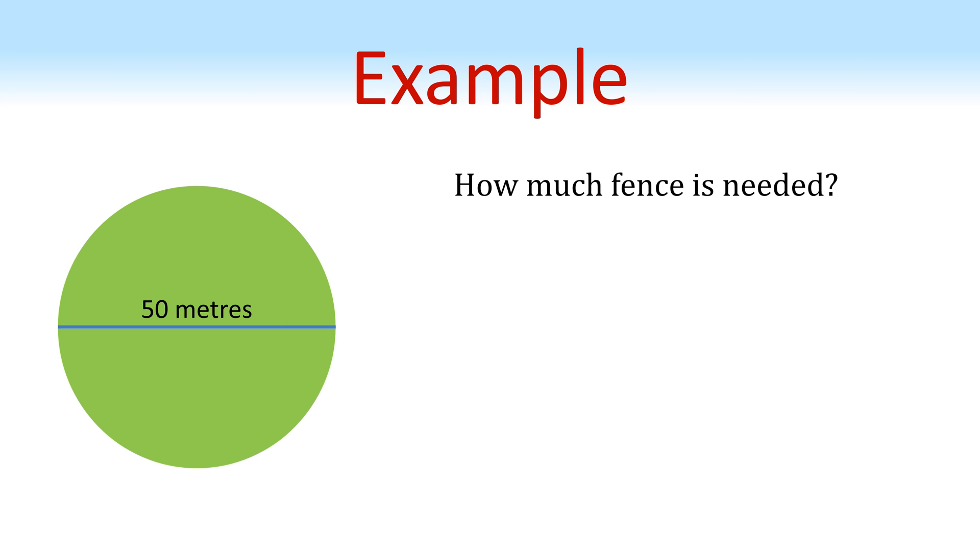Pi isn't just a cool number we learn about in maths class. It's actually everywhere. Suppose a farmer has a circular field with a diameter of 50 metres. The farmer wants to build a fence around the whole circumference of the field. How much fence does he need? Well, we know that circumference divided by diameter equals pi. Therefore, the circumference equals pi times diameter, which equals 3.14 times 50, which equals 157 metres. So the farmer needs 157 metres of fence.